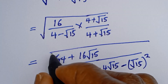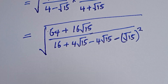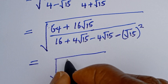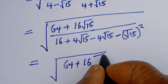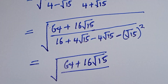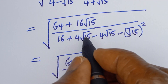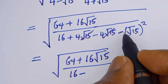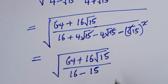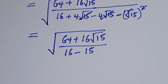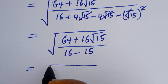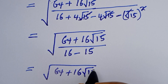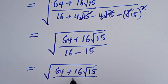Taking the square root, this is equal to: square root of 64 plus 16 root 15, divided by — the 4 root 15 and minus 4 root 15 cancel, leaving 16 minus 15, which equals 1. So this is equal to square root of 64 plus 16 root 15 divided by 1.